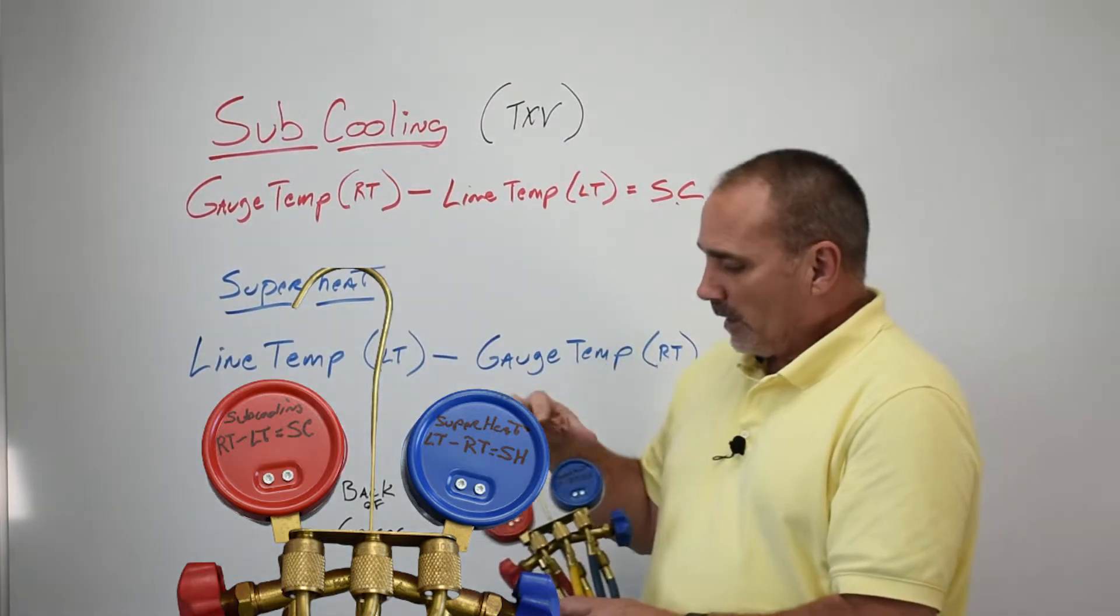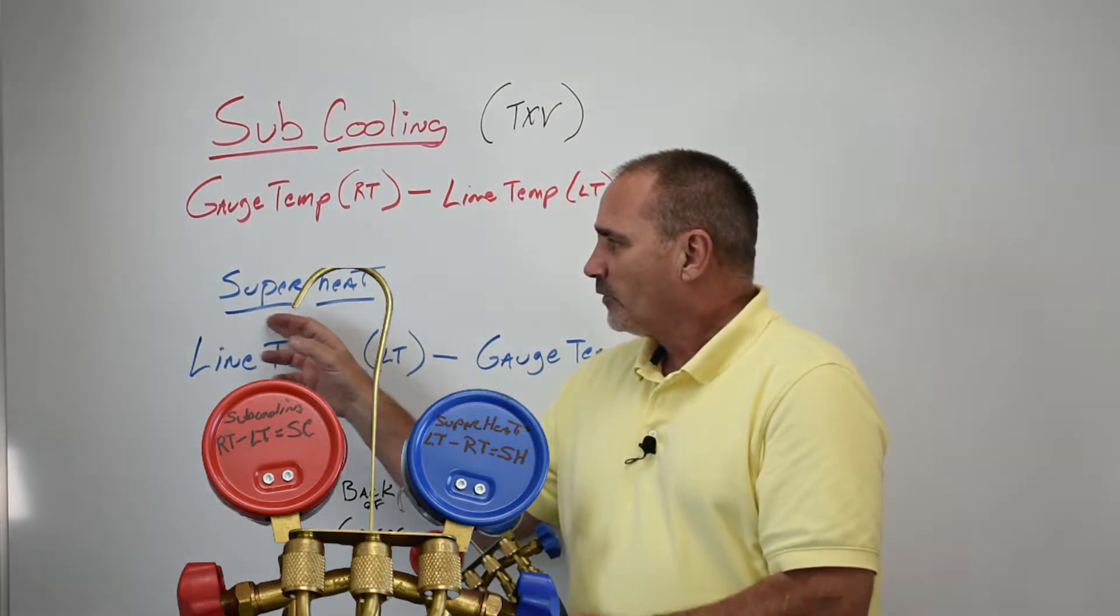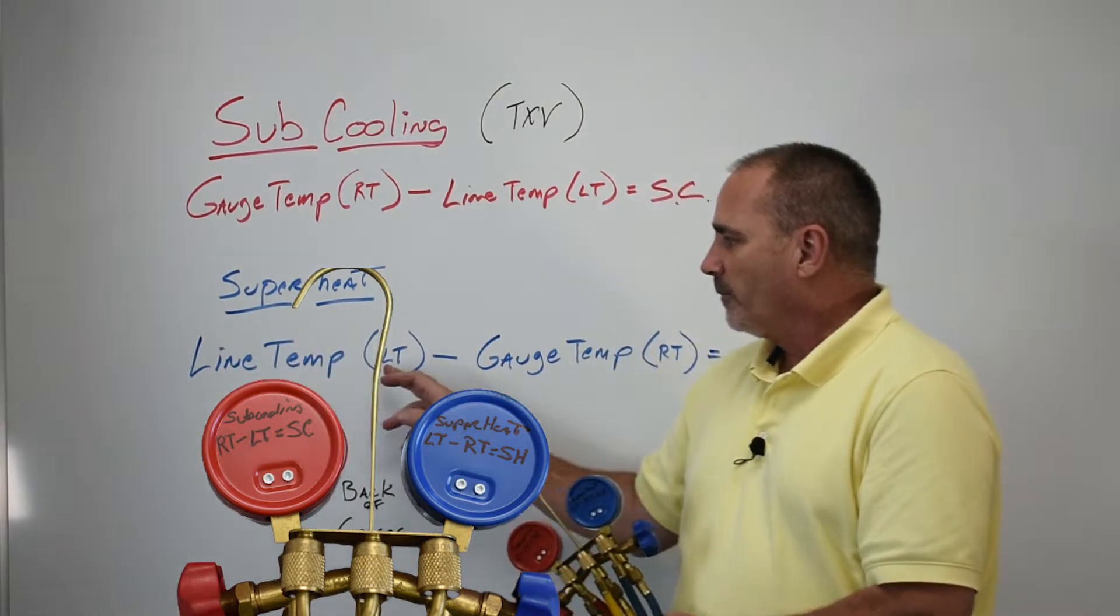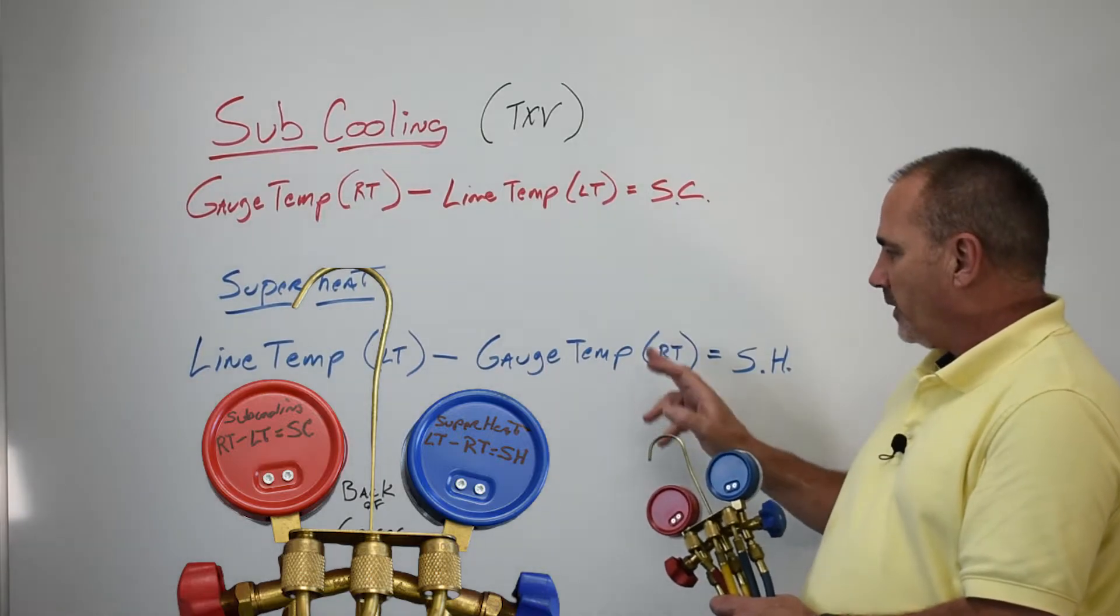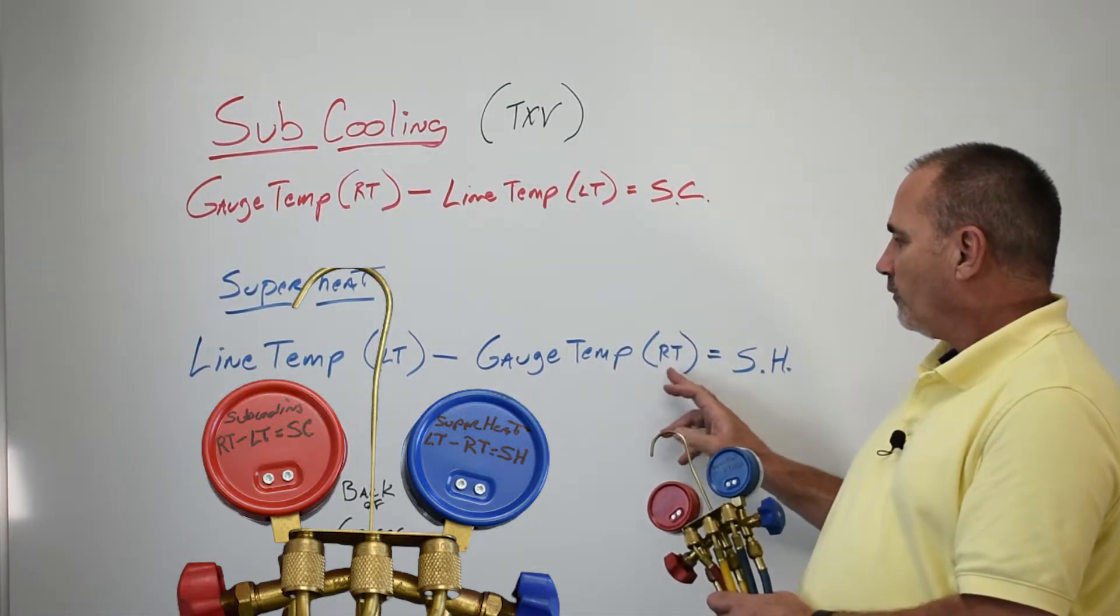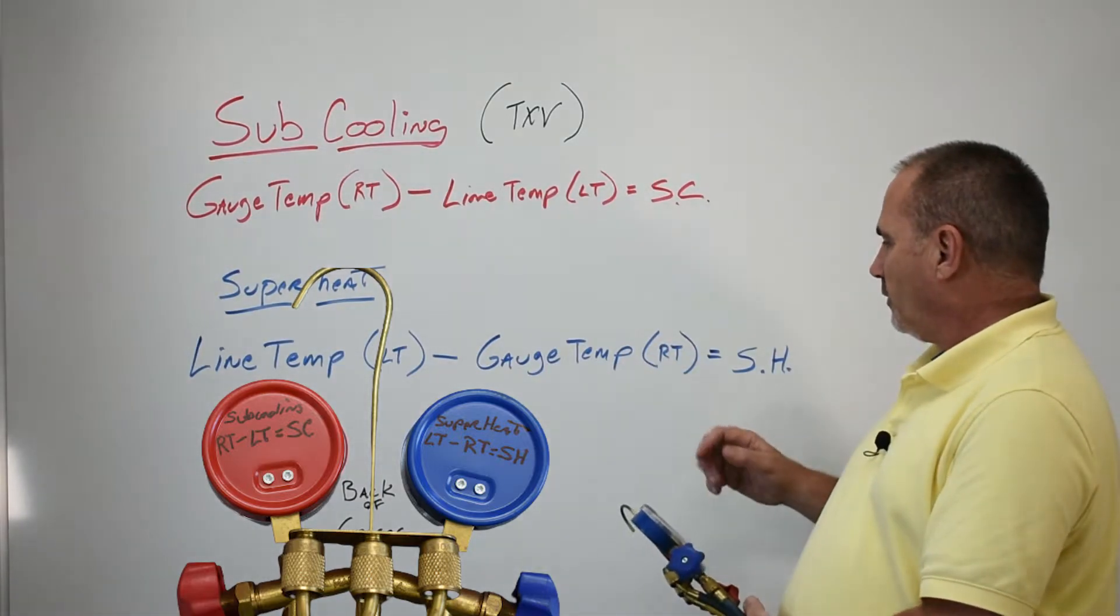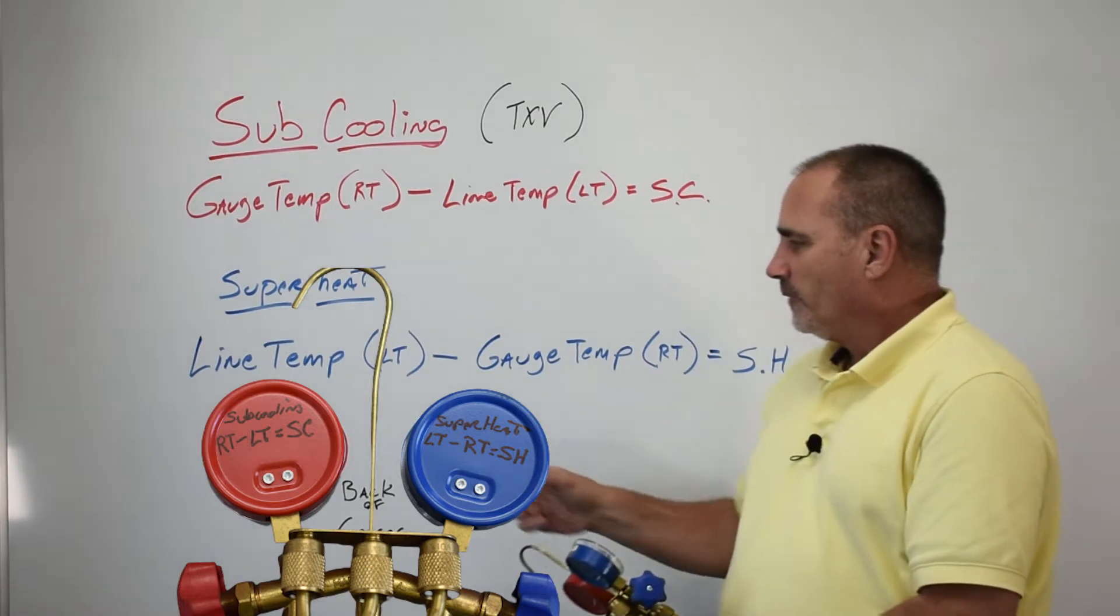And then on the suction side for superheat: line temp (LT) minus gauge temp (again I refer to it as RT for refrigeration temp, depending on what ring you're using) equals your superheat.